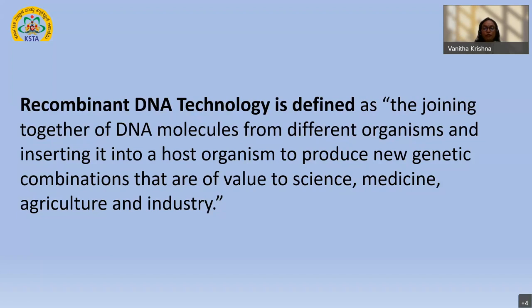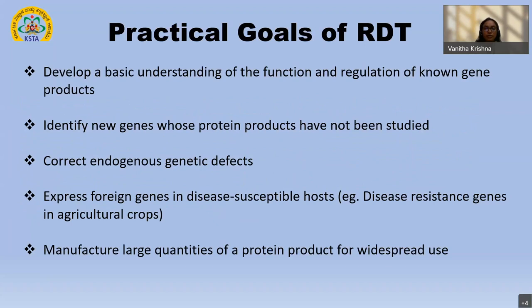My intention is to give you the feel of how exactly the basic tools of recombinant DNA technology evolved to reach the stage where we can produce transgenic animals, plants, etc. What exactly are the practical goals of RDT? One thing is we want to develop a basic understanding of what is the function and regulation of genes which are already known. In order to do so, I obviously want to first clone it into a particular vector, and then prepare it in a large scale for downstream processing.